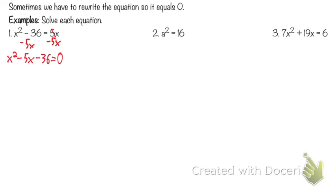Now it's equal to zero, but do we have multiplication yet? No. So we have the zero part, but we don't have the product part of the zero product property. We need to get it to be multiplication, and we turn it into multiplication by factoring.